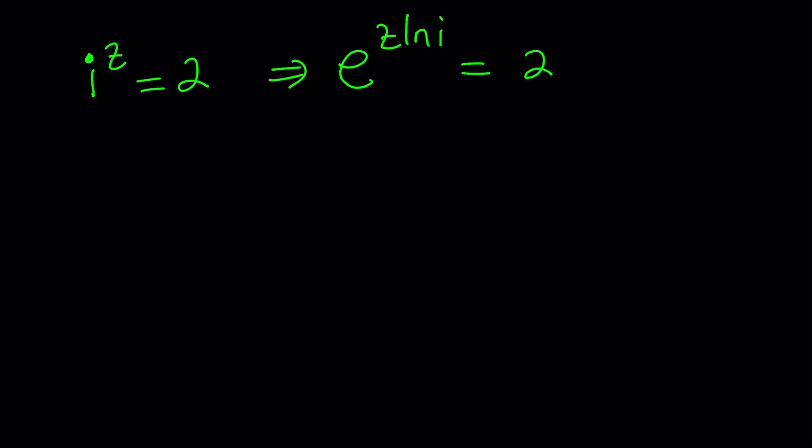So our goal here is basically to write both sides as an exponential so that we can do the natural log and get rid of all the bases and just solve it like normal. Because this is exponential, we want to turn it into something more linear. So here's a couple of things we need to do. First of all, we need to evaluate ln i. What is the natural log of a complex number?